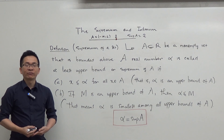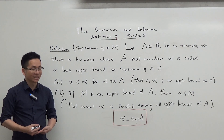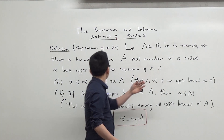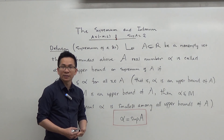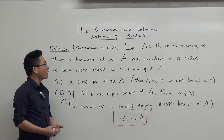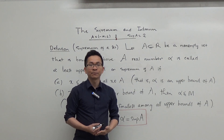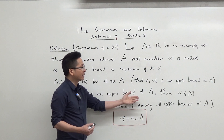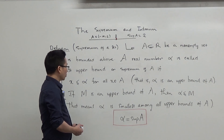Now I'm going to give the formal definition of the least upper bound or the supremum of a set. Let A be a subset of the real line that is non-empty and bounded above. A real number alpha is called a least upper bound or supremum of A if the following conditions are satisfied. First, x is less than or equal to alpha for all x in A — meaning alpha is an upper bound of A. The second condition says that alpha is smallest among all upper bounds of A; that means if M is an upper bound of A, then alpha is less than or equal to M.